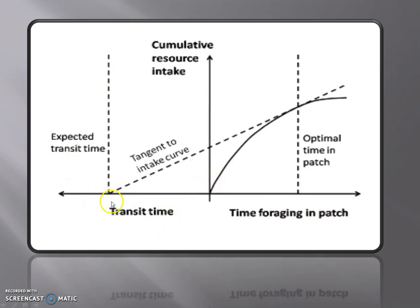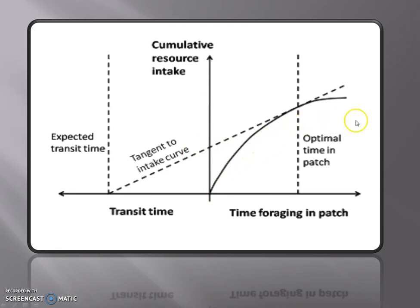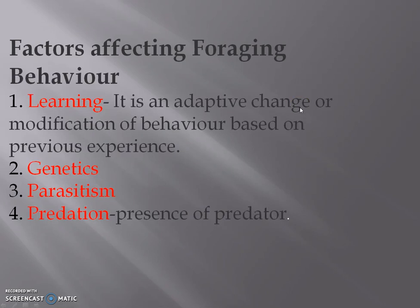Here is a graph showing the expected transit time as a tangent to the intake curve. This represents the optimal time in the patch — that is, the optimal time spent foraging in a patch. The curve shows cumulative resource intake, representing energy produced or spent. This graph illustrates the optimal foraging concept visually.